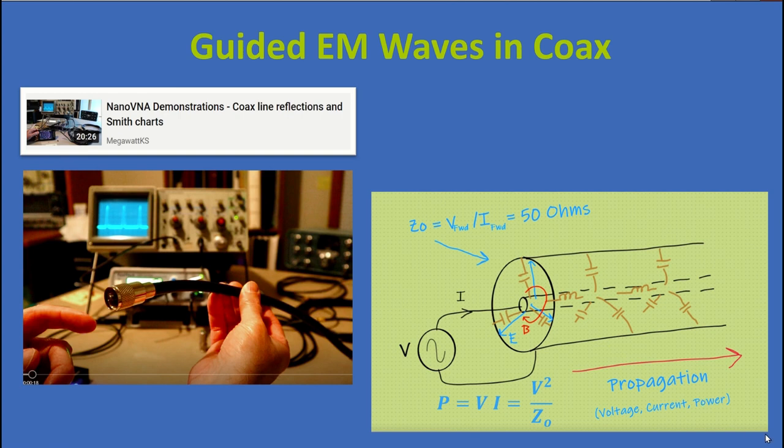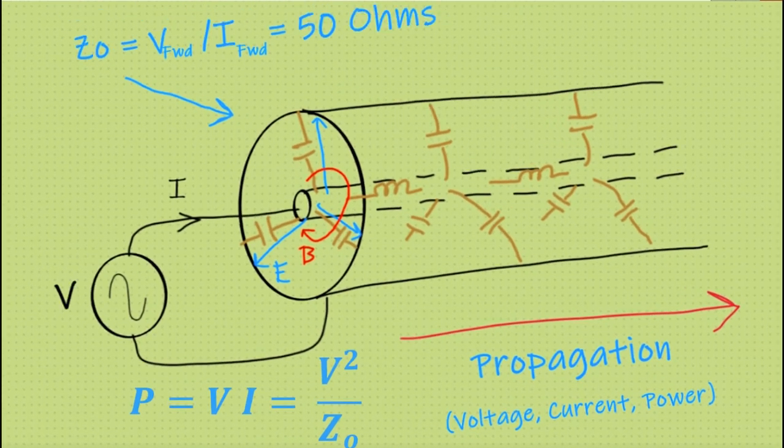And over on the right, we have an illustration that basically summarizes some key points from that previous video in the Nano VNA series. We take a sine wave voltage source and we connect it to the coax. And what happens is some current flows in. So you have voltage and current, which means you have power coming in. V squared over Z naught. Where in the case of the coax we're using, Z naught is the so-called characteristic impedance of the coax, which in this case is 50 ohms. And that injection of power into the coax, voltage times current, or voltage squared divided by 50 ohms, happens because the coax itself has capacitances and inductances in it.